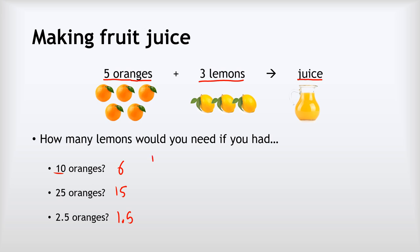You say: lemons equals your number of oranges — which in this first example is 10 — divided by the five oranges in the recipe, multiplied by the three lemons in the recipe. Dividing 10 by 5 tells you how many lots of the recipe you can make, and then multiplying by 3 tells you how many lemons you need. So 10 divided by 5 is 2, multiplied by 3 gives us 6 lemons.